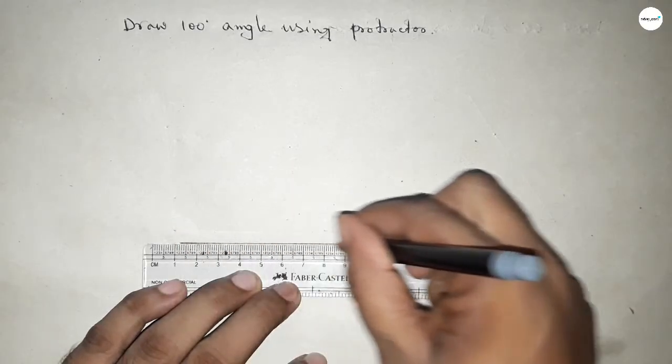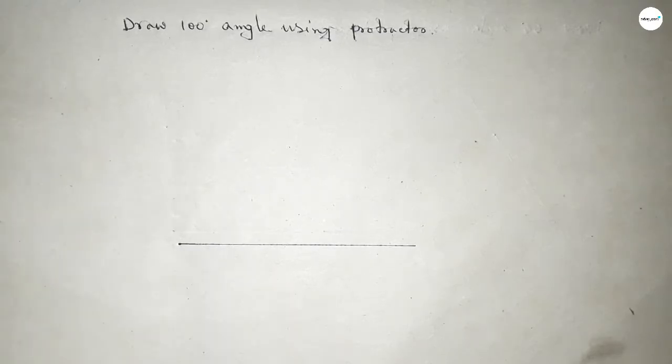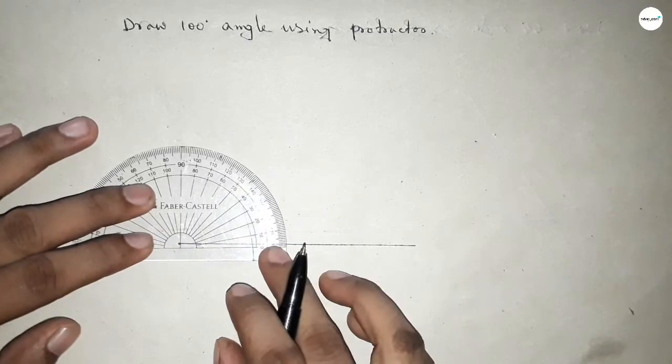First of all, we have to draw a line of any length. So first drawing a line, next marking here a point.